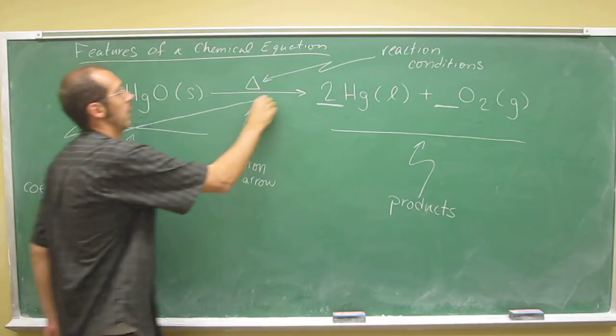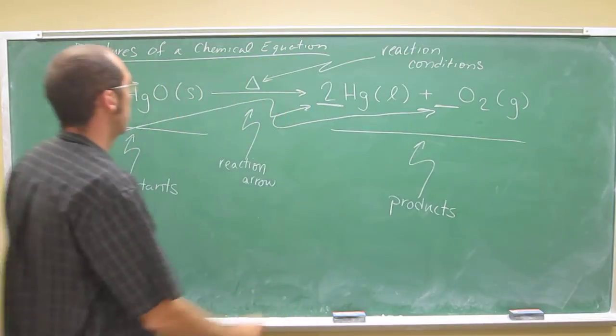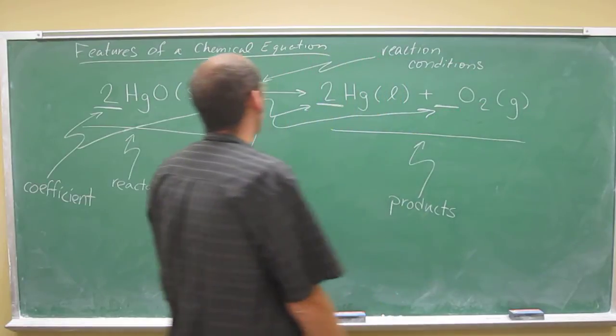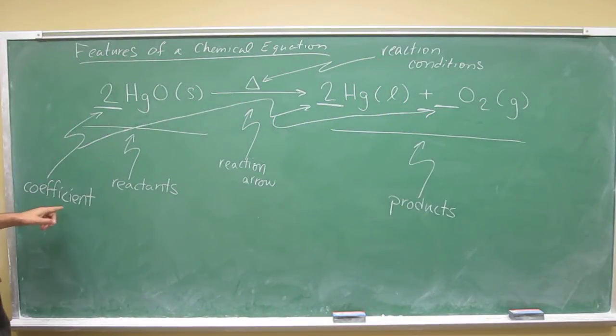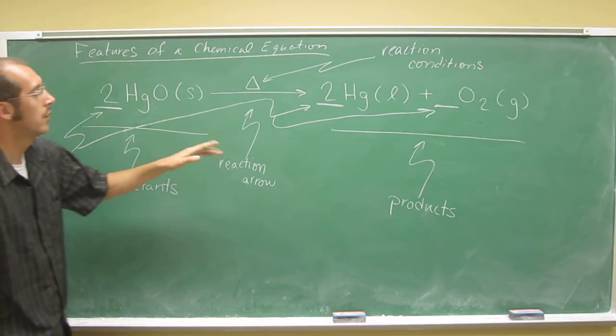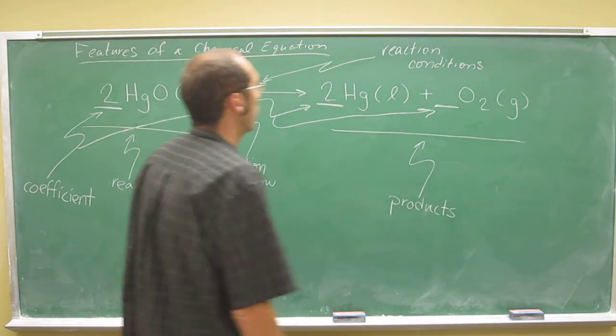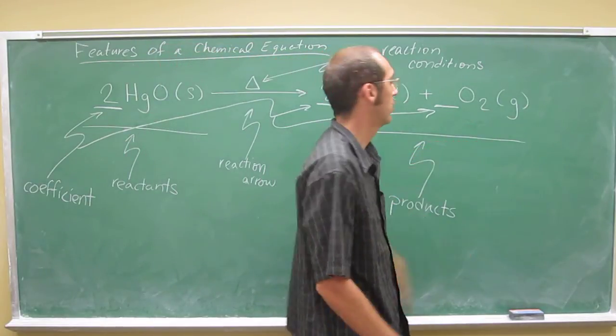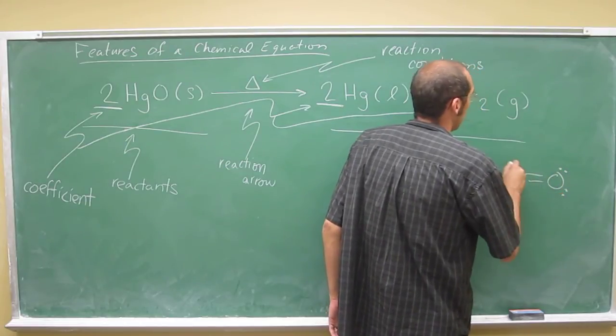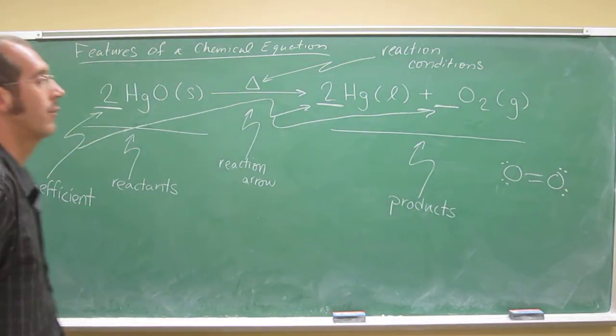So that's a coefficient, that's a coefficient, and in fact, that's a coefficient, too. It's implied that it's 1. If it's 1, you don't put anything in there. The coefficient just tells us that 2 molecules of mercury 2 oxide decompose to form 2 atoms of mercury and 1 molecule of oxygen. Remember, this 2 subscript in oxygen just means that there's 2 oxygen atoms bonded together to form the molecule O2. And you guys know that from VSEPR theory.